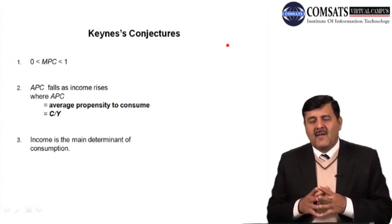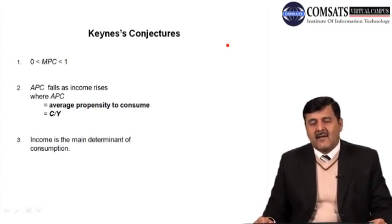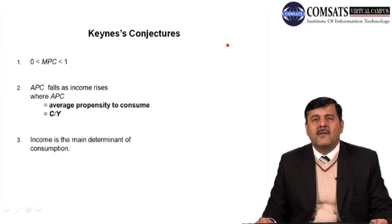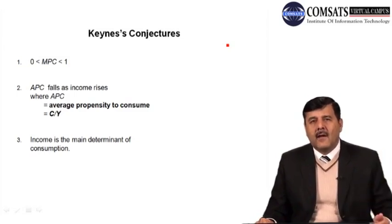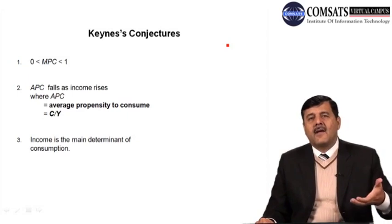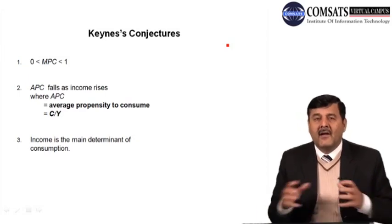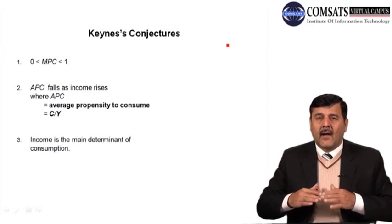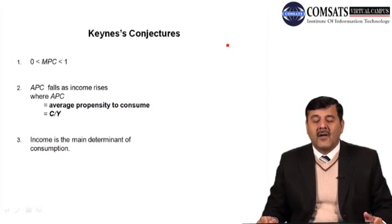MPC is greater than zero, meaning it is always positive. The second conjecture is that APC — average propensity to consume — falls as income rises, where APC = C/Y. As income goes up, consumption also goes up but by a lesser proportion, so the ratio C/Y declines. The third conjecture is that income is the main determinant of consumption.